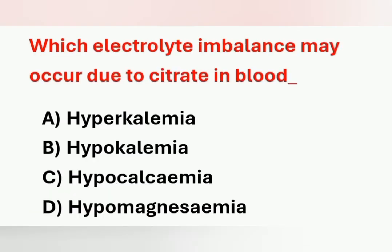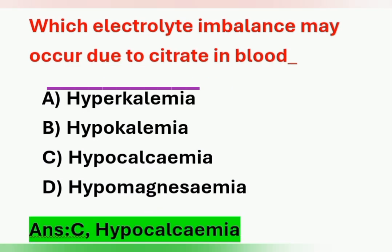Next question: which electrolyte imbalance may occur due to cigarette toxicity in blood? Options: Option A – hyperkalemia. Option B – hypokalemia. Option C – hypocalcemia. Option D – hypomagnesemia. The electrolyte imbalance that occurs in cigarette toxicity is hypocalcemia. Option C is the correct answer.